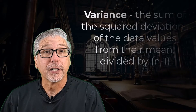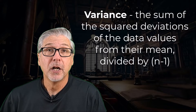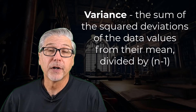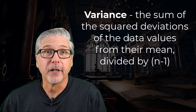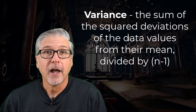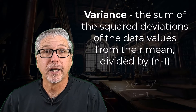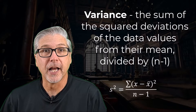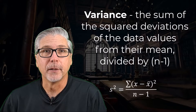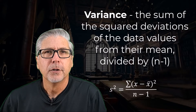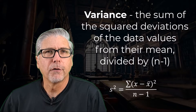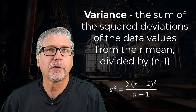The second measure I want to talk about is the variance of the data set. The variance is the sum of the squared deviations of the data values from their mean, divided by n minus 1. Here's the formula: S² = Σ(x − x̄)² / (n − 1). That's probably not working for you — or any other student I've taught over the last 30-plus years. You've heard me say I'm only going to show you formulas if I think they can help, and I think this one can.